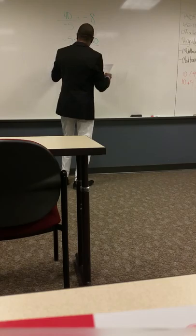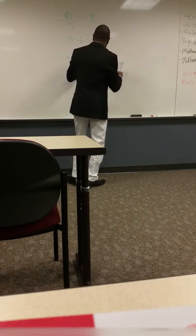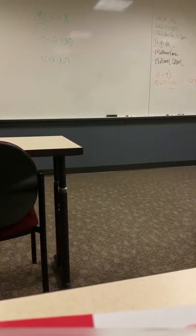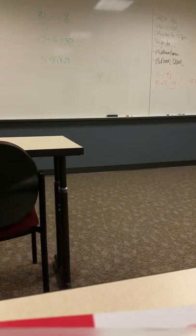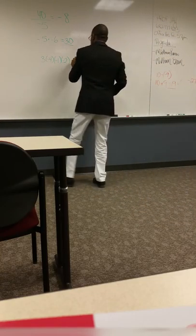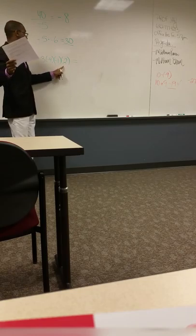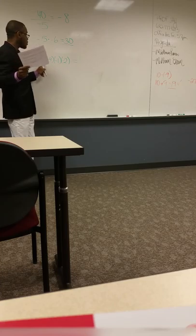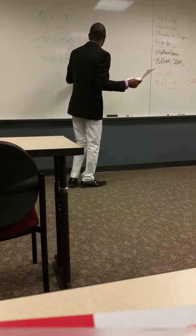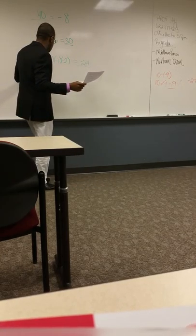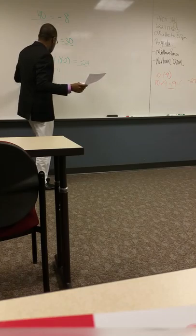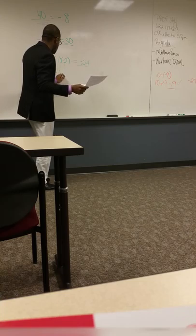Now evaluate: 3 times negative 4 times negative 1 times negative 2. There are three negatives and one positive. Two negatives give you a positive, one more gives you a negative. So: 4 times 1 is 4, times negative 2 is negative 8, times 3 is negative 24. Alternatively: negative 4 times negative 1 is positive 4, times 12... the result is negative because negative 12 times negative gives positive 12, times negative 2 is negative 24.